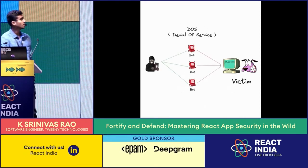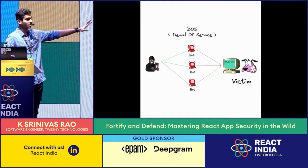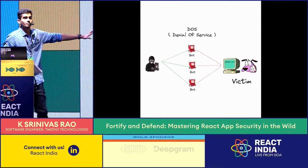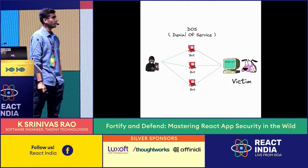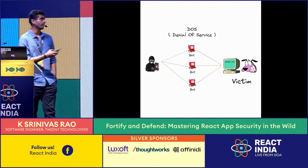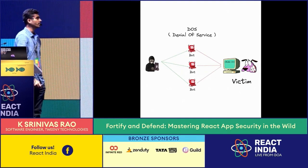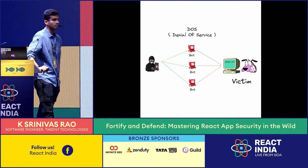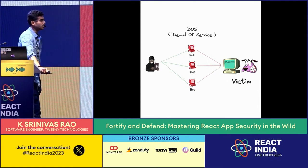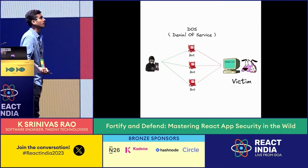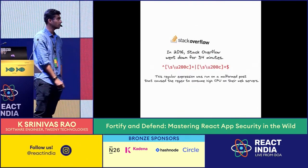This one is my favourite. When you hear denial of service, you might picture an attacker controlling computers through some rootkit or malware, constantly sending traffic to crash a victim's system. But there is another, subtler side to denial of service — what we call regular expression denial of service — and let's see an example.